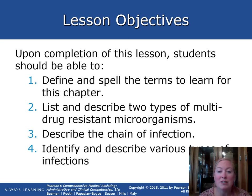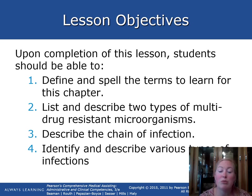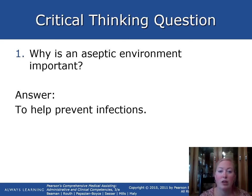By the end of this lesson, students should be able to define and spell the terms for this chapter, describe two types of multi-drug resistant organisms, describe the chain of infection — which is really important in the medical field — and identify and describe various types of infections.